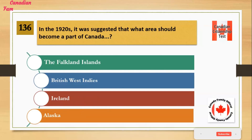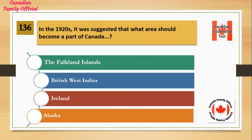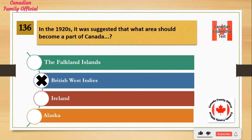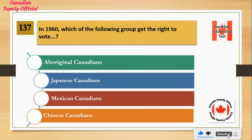In the 1920s, it was suggested that what area should become a part of Canada? Number 1: The Falkland Islands. Number 2: British West Indies. Number 3: Ireland. Number 4: Alaska. And the answer is British West Indies.